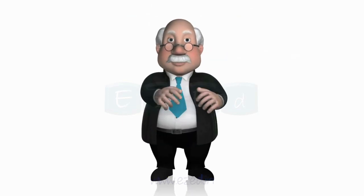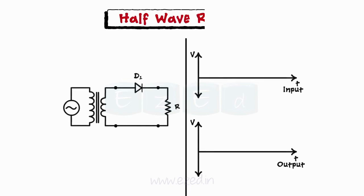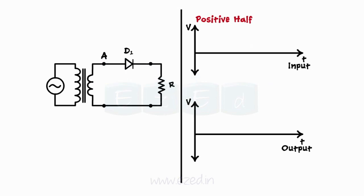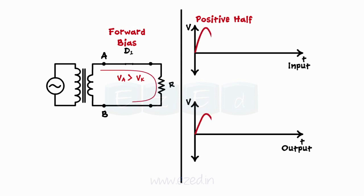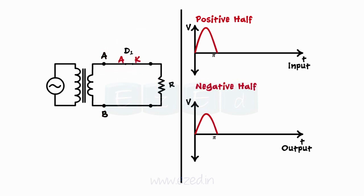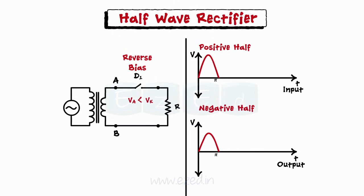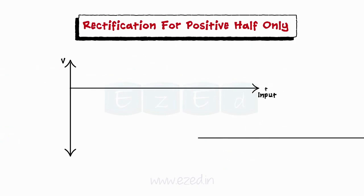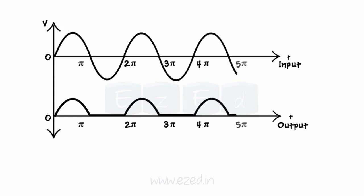Now let's understand the working of a half wave rectifier. During the positive half of the input signal, point A is at higher potential than point B. Hence the anode of the diode receives more voltage than the cathode, making the diode forward biased — it acts as a closed switch and allows current to flow. Thus we obtain a replica of the input signal with lower amplitude due to the step-down transformer. During the negative half, point B is at higher potential than point A, making the diode reverse biased — it acts as an open switch and no current flows, giving zero output. As rectification occurs only on half of the input, this circuit is called a half wave rectifier.